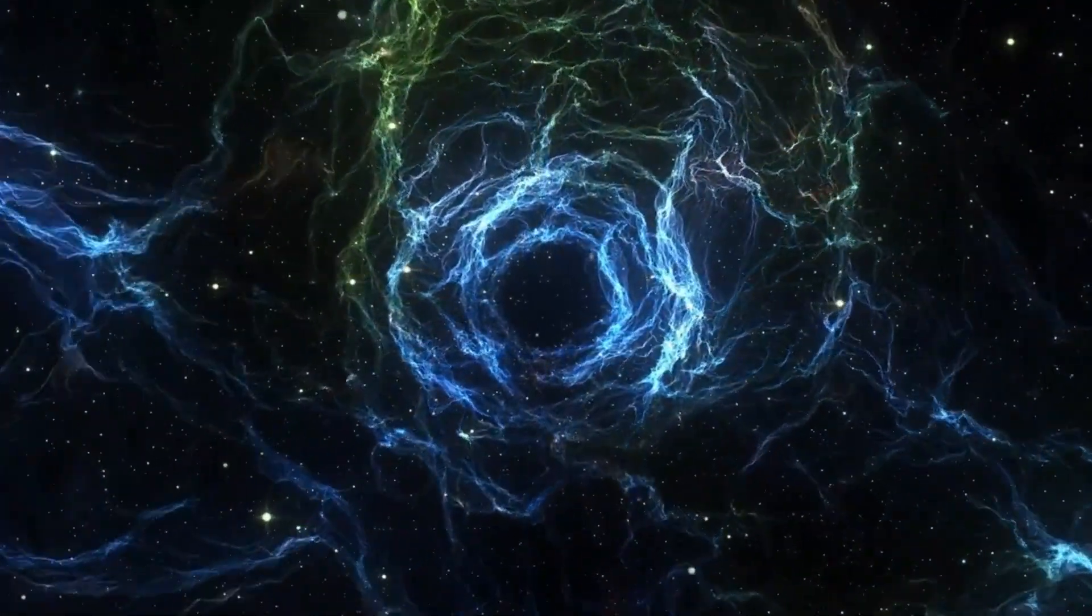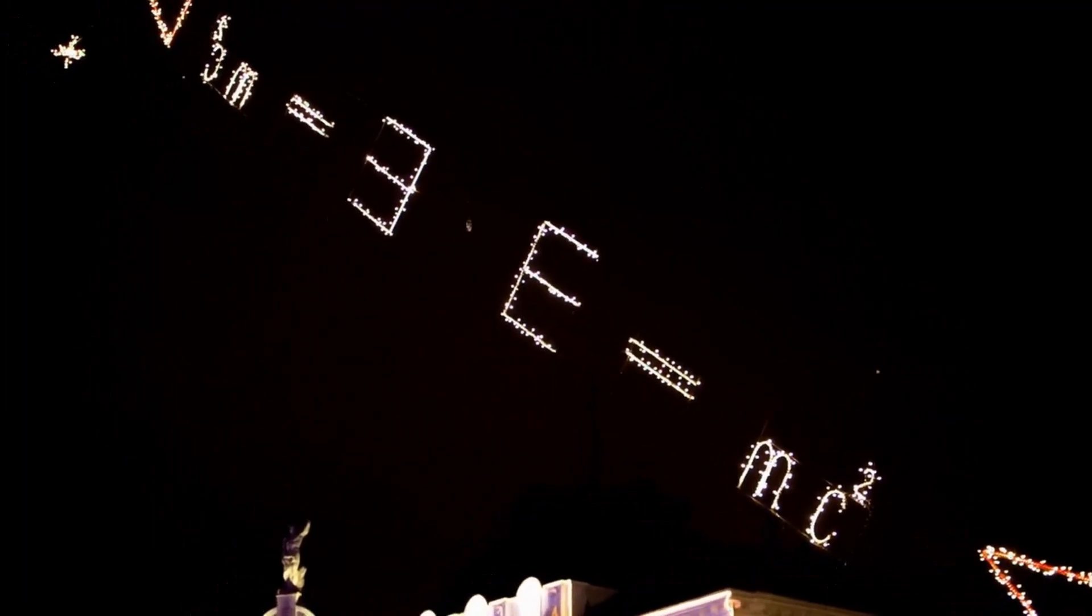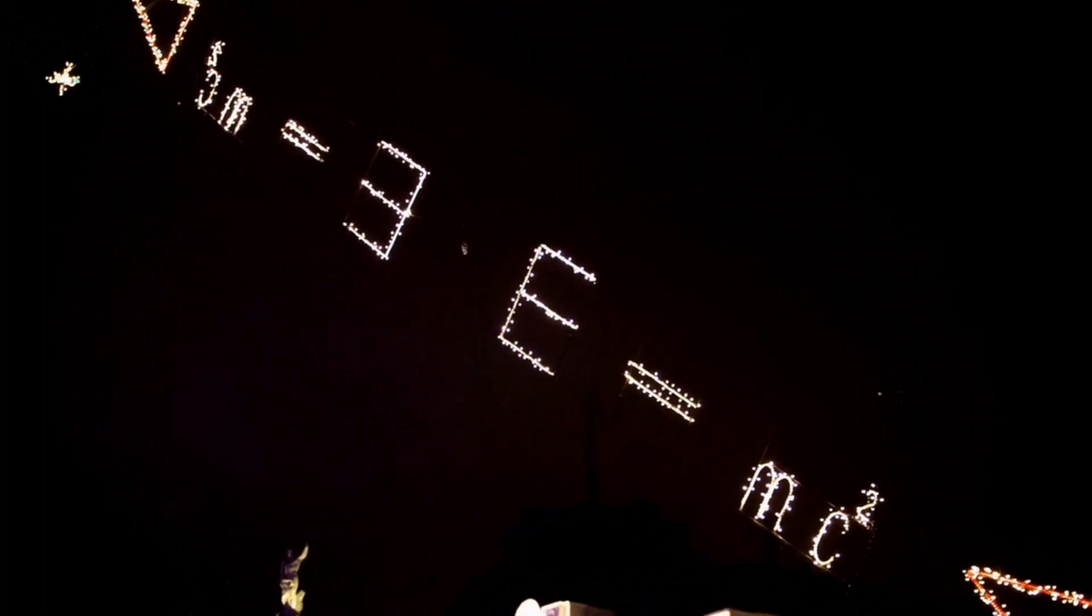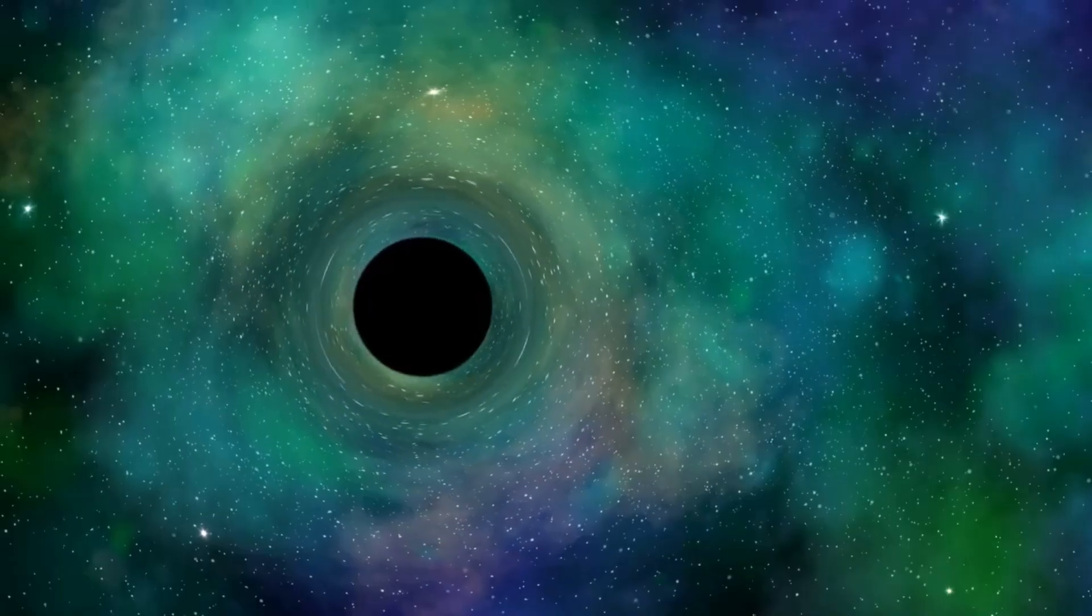There are some solutions of general relativity that allow for the existence of wormholes, with each mouth being a black hole. However, a naturally occurring black hole, formed by the collapse of a dying star, on its own will not create a wormhole.